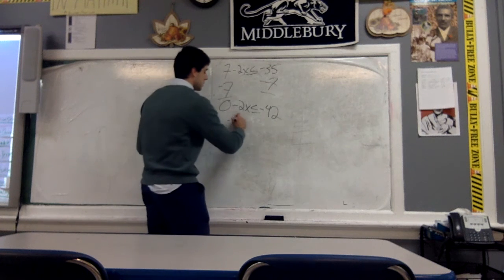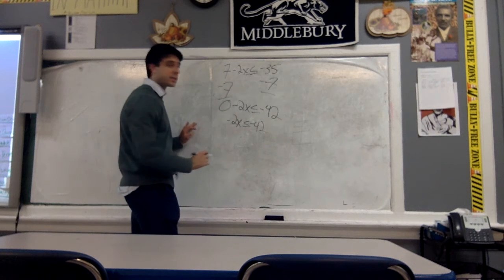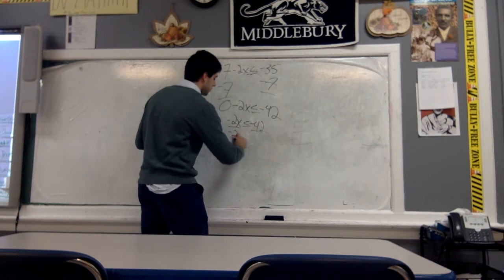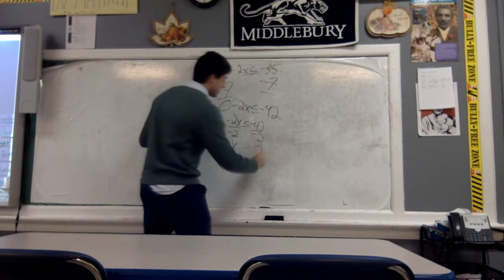Our next step is we're going to write this as negative 2x is less than or equal to negative 42. We're going to divide both sides by negative 2, and we have x, and 2 goes into 42, 21 times.